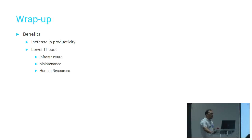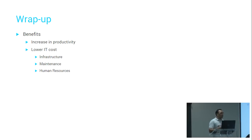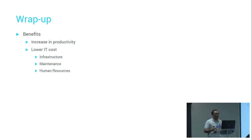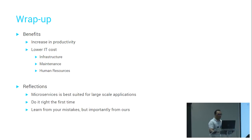To wrap up: we definitely saw a major increase in productivity. We also saw lower IT costs — we could run on much less and cheaper infrastructure on AWS. Because development and maintenance became much easier, we could also do more with fewer people. We have fewer people than seven years ago but are more productive with those fewer people. Microservices is best suited for large-scale applications. Do it right the first time, and learn from your mistakes — but more importantly, learn from mine.